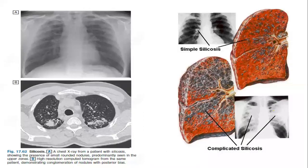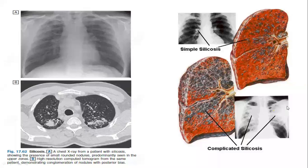Looking at images of a silicosis patient: on the left, chest X-ray and CT scan show rounded opacities predominantly in the upper and middle lobes. On the right, the gross lung specimen shows small rounded nodules, also predominantly in the upper and middle lobes.